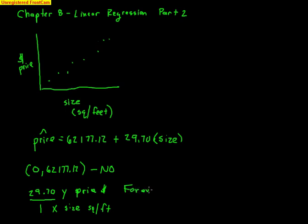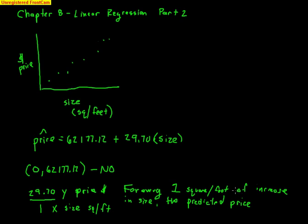For every, and that's how you start off with any slope interpretation, for every one square foot of increase in size, the predicted price increases by $29.70. And I really can't stress enough that if you can't do that interpretation, you're going to fail the entire unit, because that interpretation of the slope is so vital to your understanding of what's going on here.